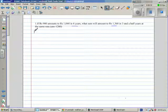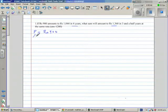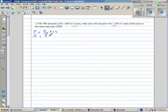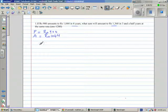So here we can see that the principle is rupees 900. Your amount is, let's write what is given. Amount is 1,044. Amount is principle plus interest. So the number of years is 4 years. We don't know the rate.